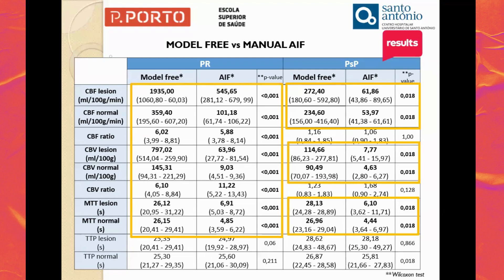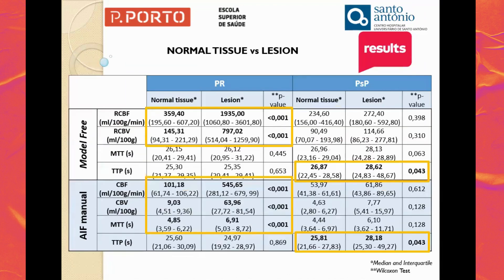In terms of differences between the models, globally the values of the analogous metrics are significantly different between the models for almost all metrics. This shows us that the model we use influences the absolute metric values, which is something we must take into account. In terms of tissue differentiation, the absolute metrics show significant differences for both models.